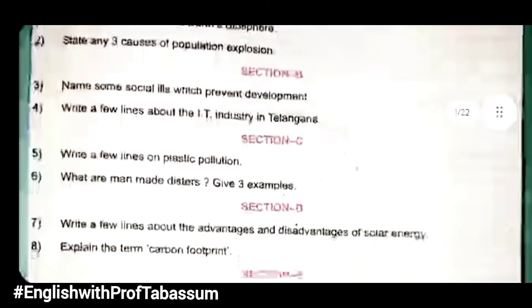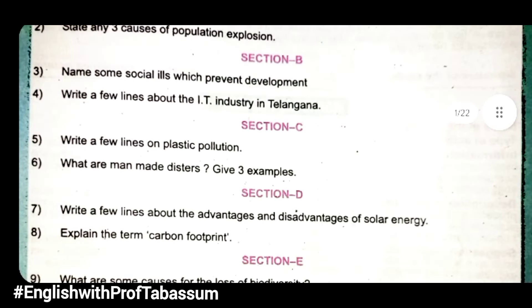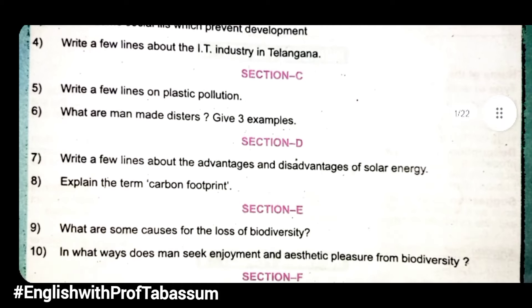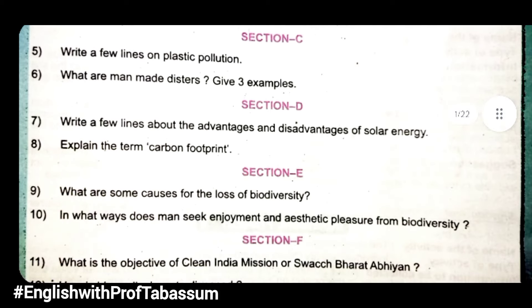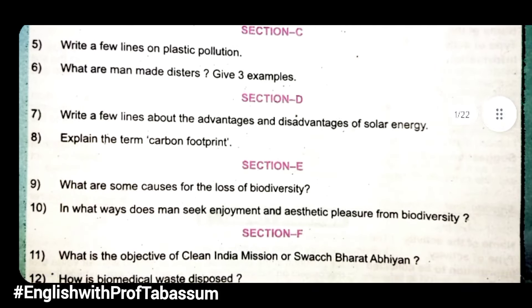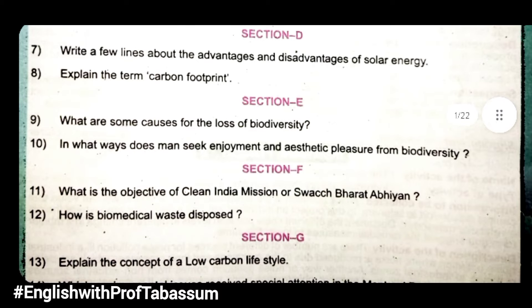Section B: Name some social ills which prevent development. Write a few lines about the IT industry in Telangana. Section C: Write a few lines on plastic pollution. What are the man-made disasters? Give 3 examples. Section D: Write a few lines about the advantages and disadvantages of solar energy. Explain the term carbon footprint.